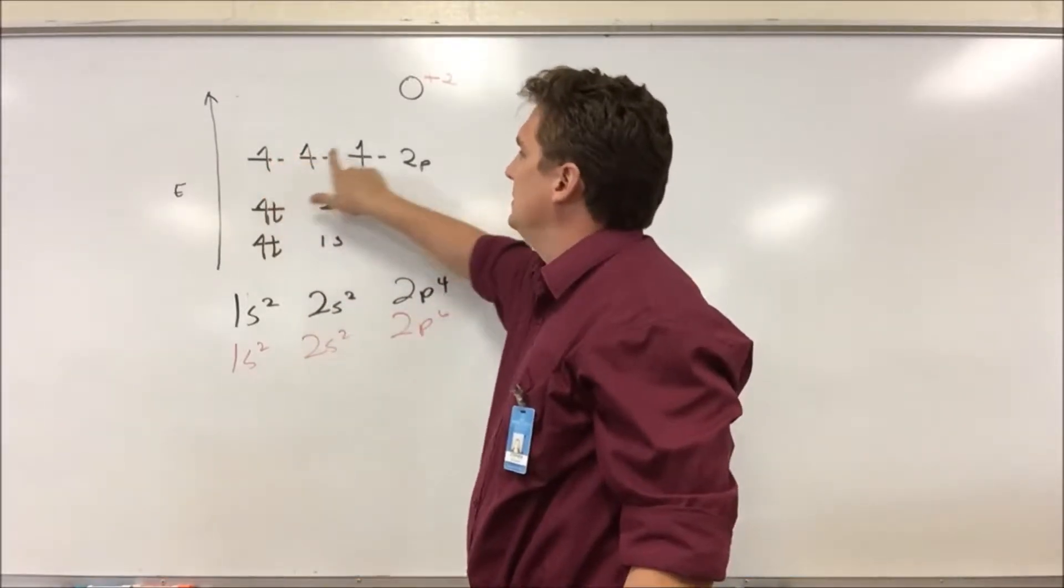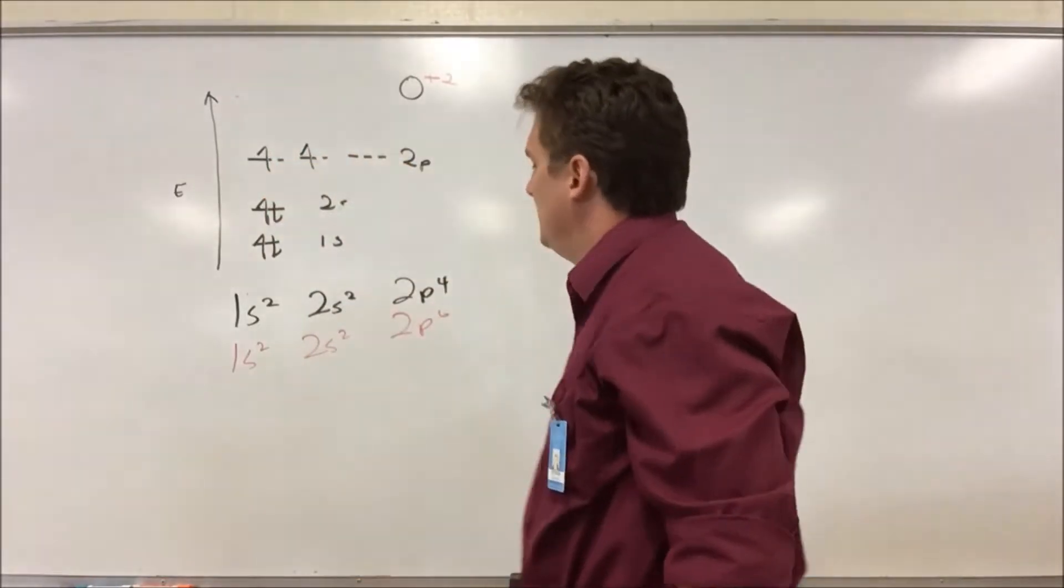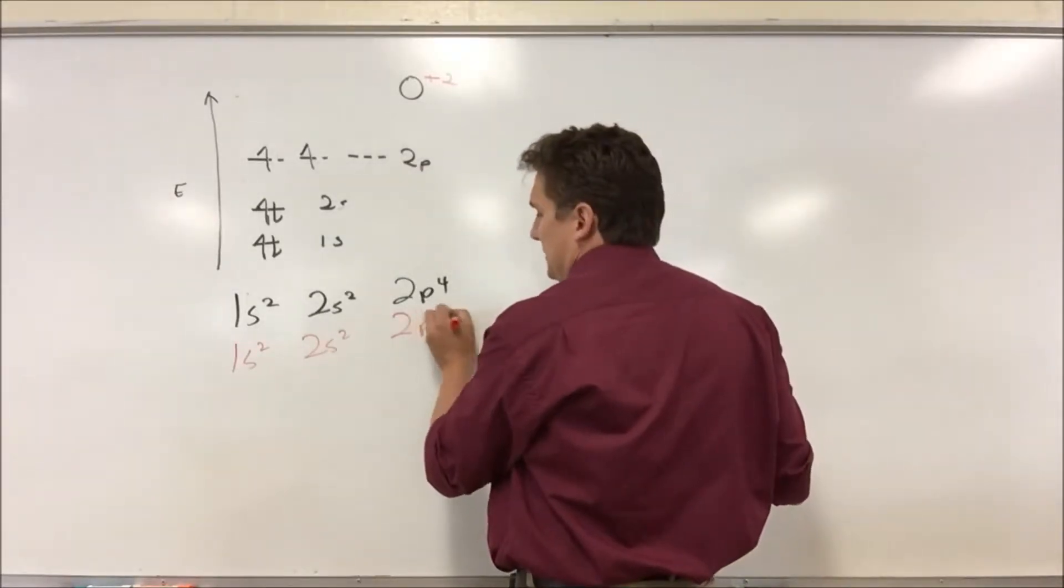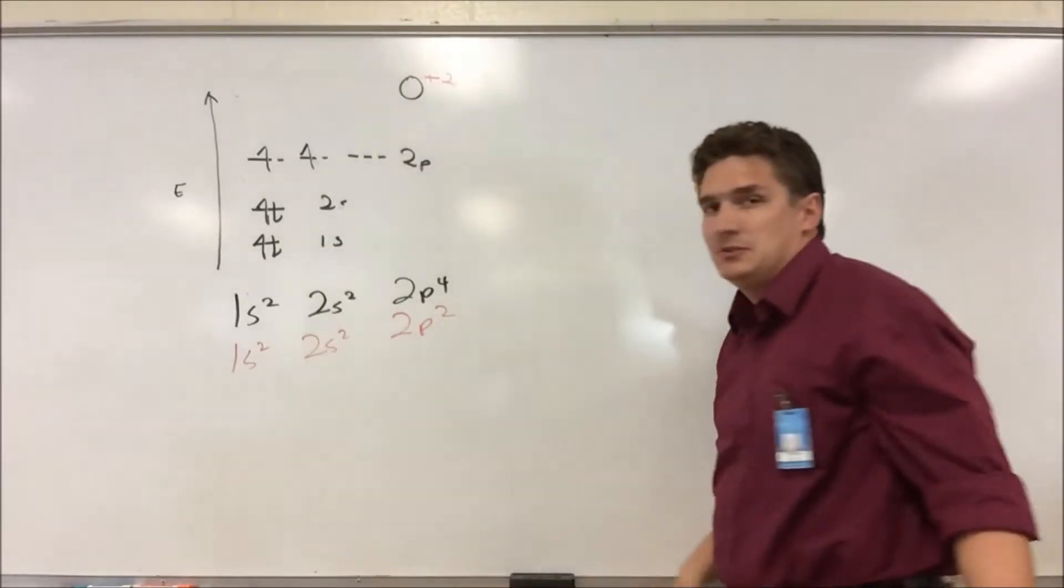Well, first we have to unpair. And when we look at this plus two, we have to lose two electrons. So this will give us a 1S2, 2S2, 2P2.